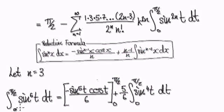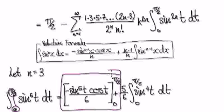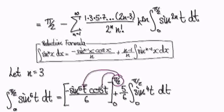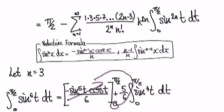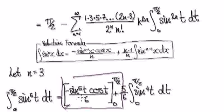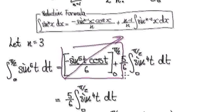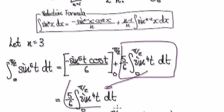When you evaluate it from 0 to pi over 2, this first term disappears. Because cos of pi over 2 is 0, this whole block becomes 0 and disappears. That leaves us only with the remaining integral term. So now we need to integrate sine to the power of 4. We apply the reduction formula again on sine to the power of 4, concentrating on that block.